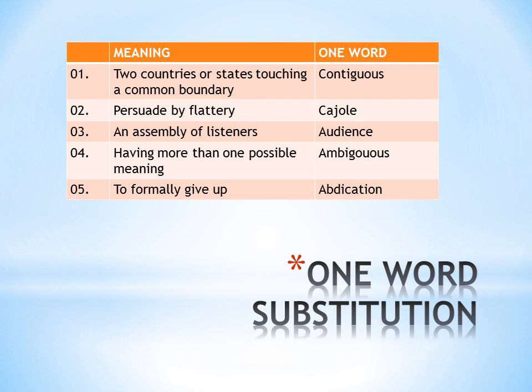Fourth is: having more than one possible meaning. That is called ambiguous. If a word has more than one meaning and you cannot understand what it refers to, it is ambiguous — meaning it is not clear.